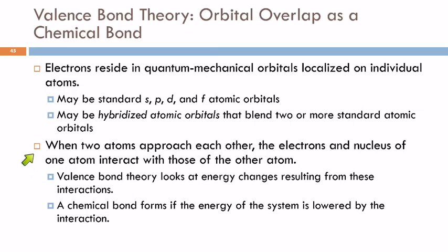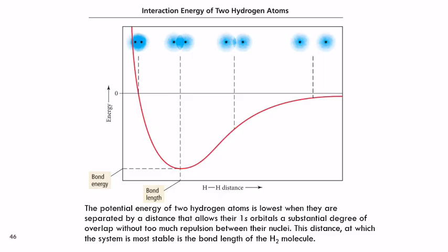When two atoms come together, the electrons and nucleus of one atom are going to interact with the electrons and nucleus of the other atom. And so valence bond theory looks at how the energy changes that result when this happens. A chemical bond is going to be formed if the energy is lowered by doing that. So here we have a graph with energy going up here. And the x-axis represents the distance between the two hydrogen atoms. So we've got two hydrogen atoms approaching each other. So here they're just getting close enough to have some interaction.